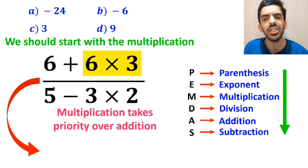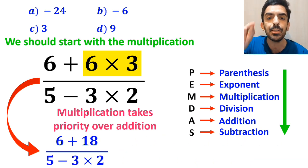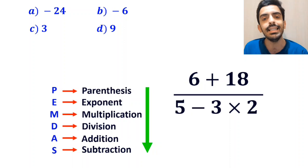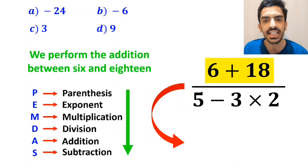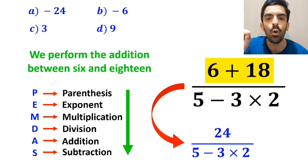So, instead of the original expression, we can write 6 plus 18 over 5 minus 3 times 2. And the next step, we perform the addition between 6 and 18. And instead of this expression, we can write 24 over 5 minus 3 times 2.